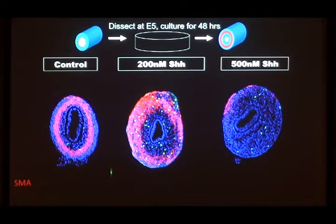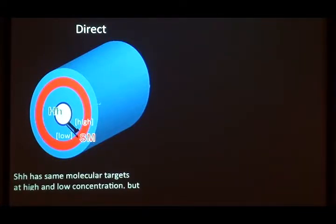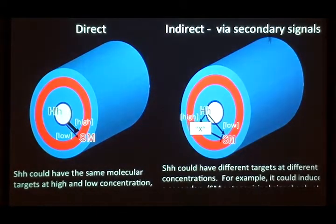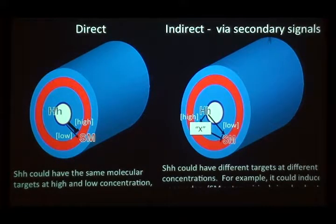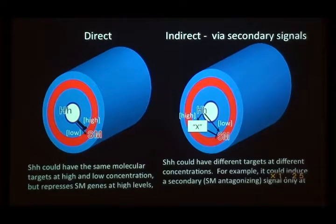There are two ways in principle you can get that sort of response. One way would be that the same signal is both inducing and blocking smooth muscle. But an alternative is that hedgehog could induce a second signal — hedgehog is always inducing muscle if it can, but there's a second signal that blocks the formation of muscle, coming on at a high threshold in response to hedgehog signaling but not at a lower threshold.